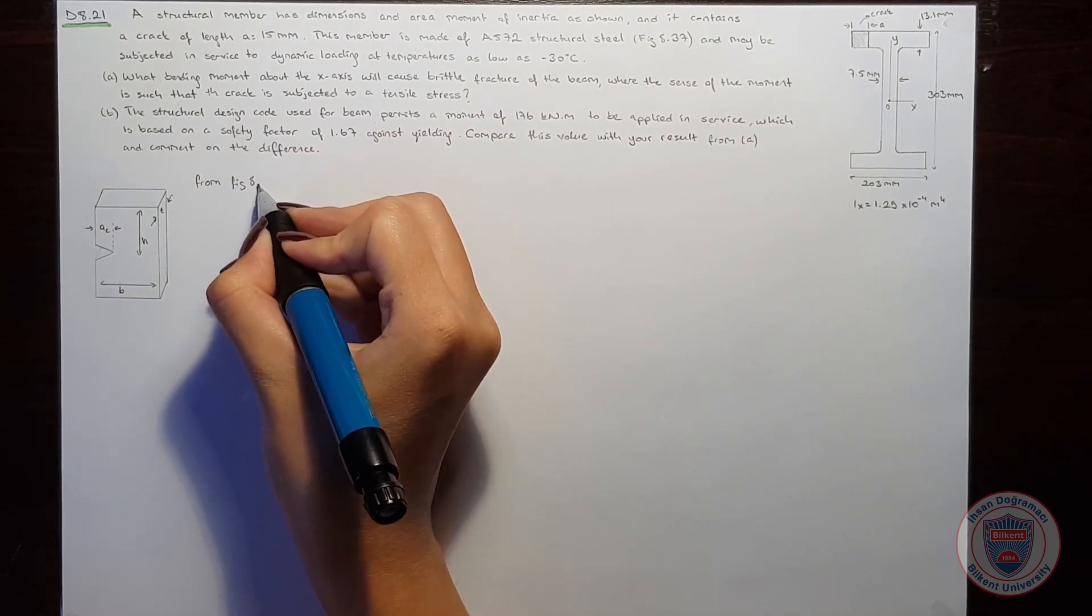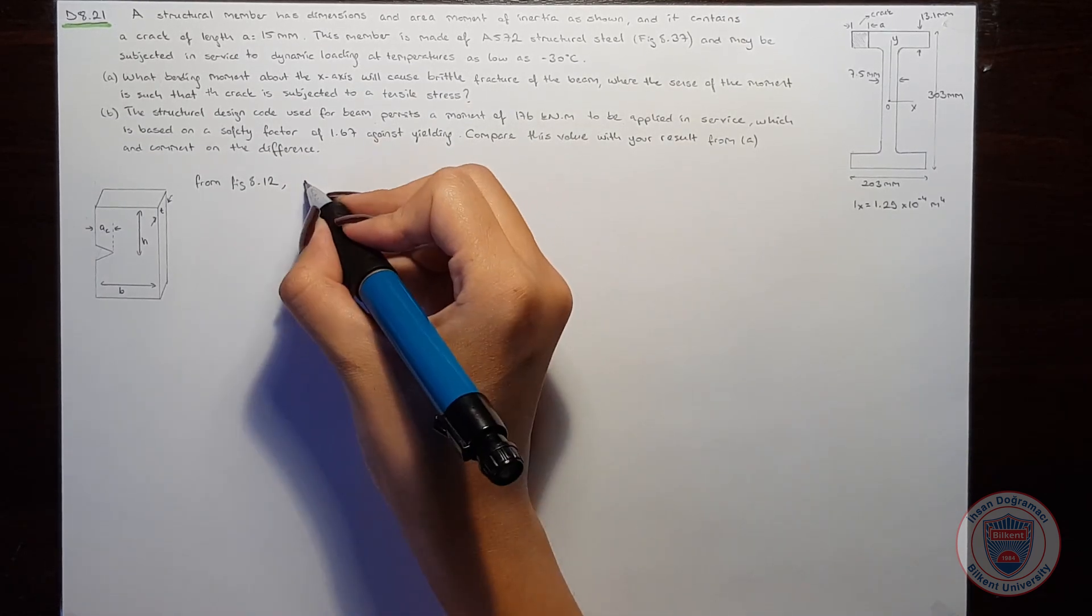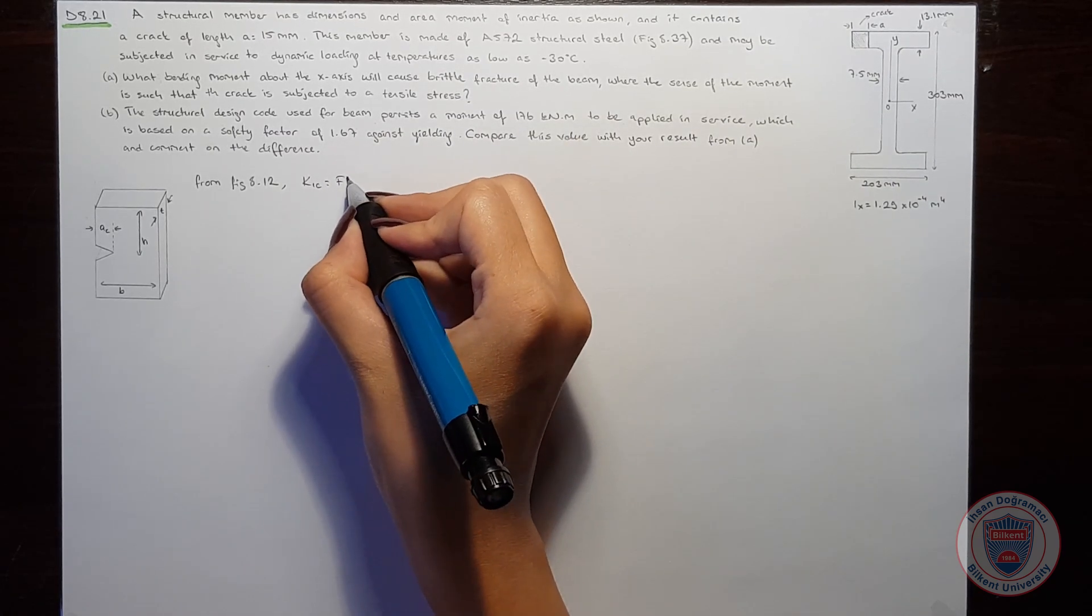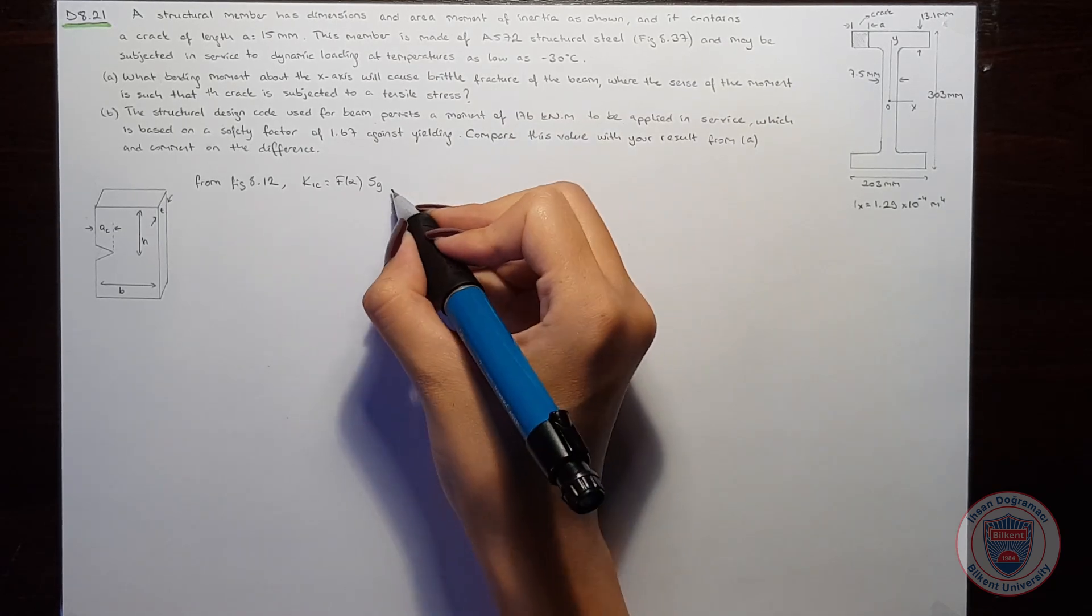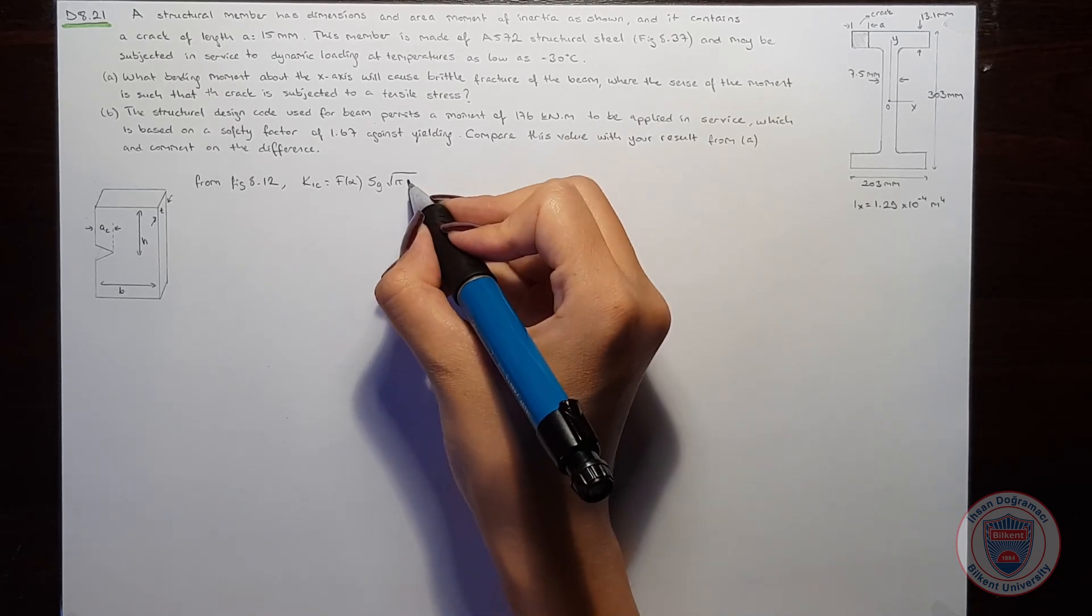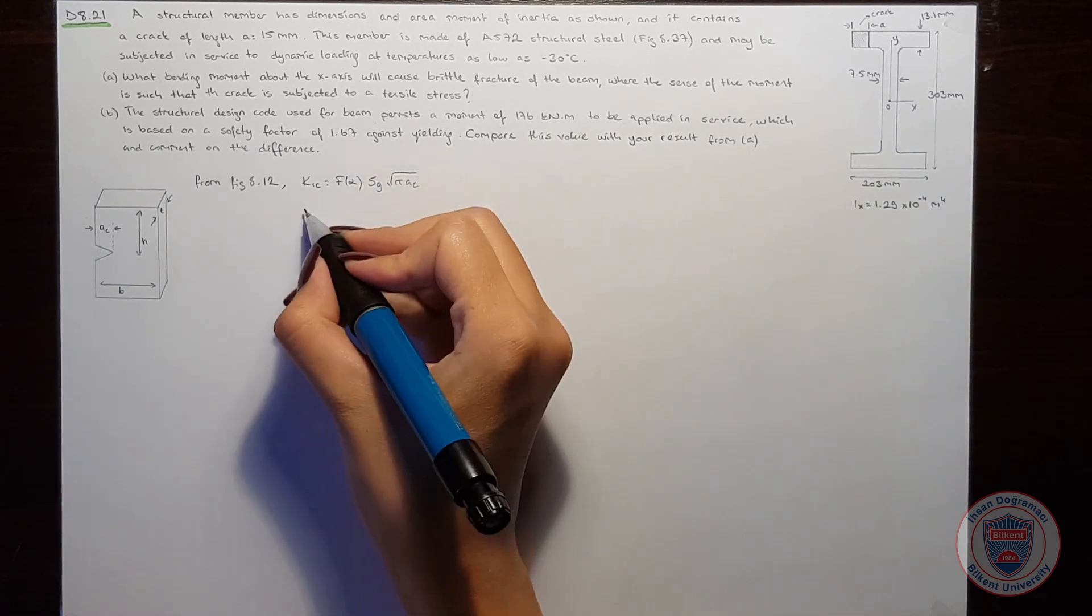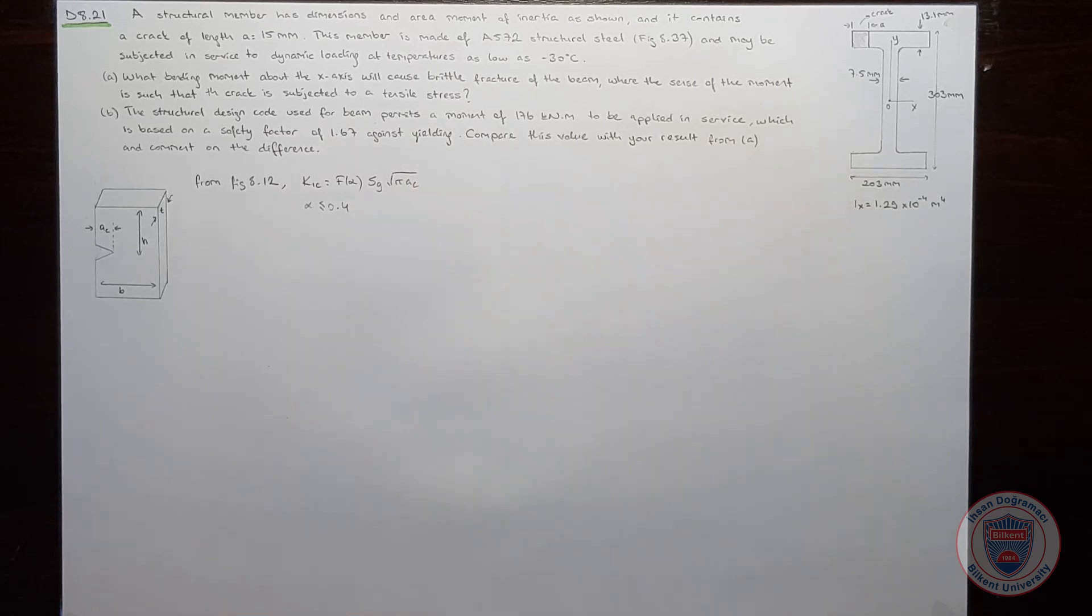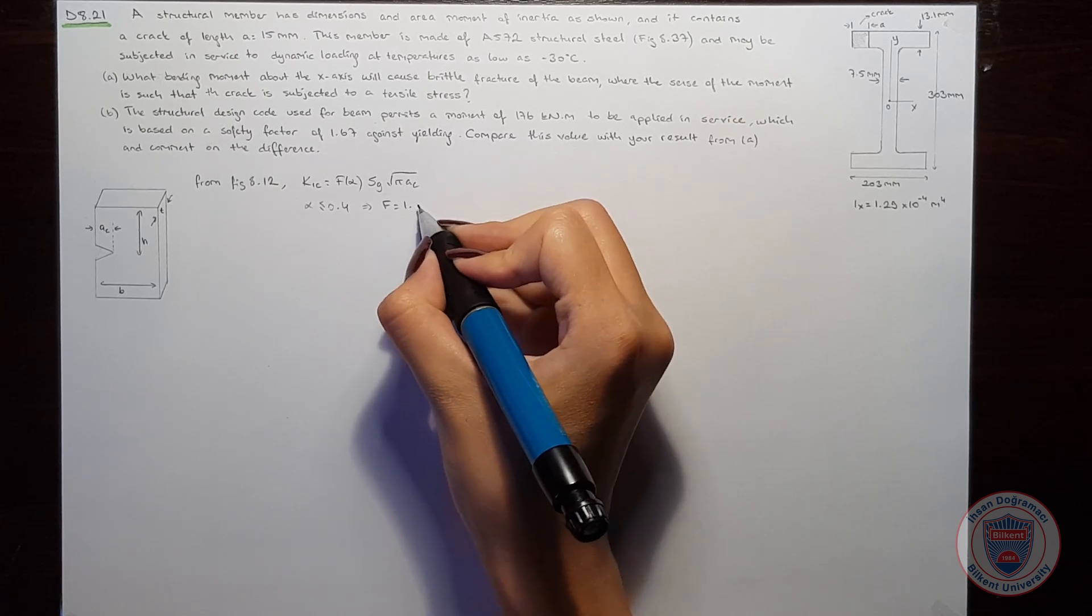From figure 8.12, we know that the critical stress intensity factor is equal to the form factor times Sg times square root of pi times the critical crack length. And also, for alpha smaller or equal to 0.4, we can use f equal to 1.12.